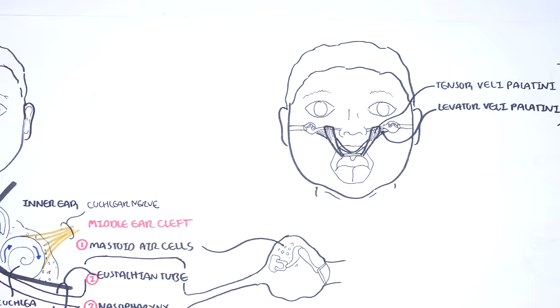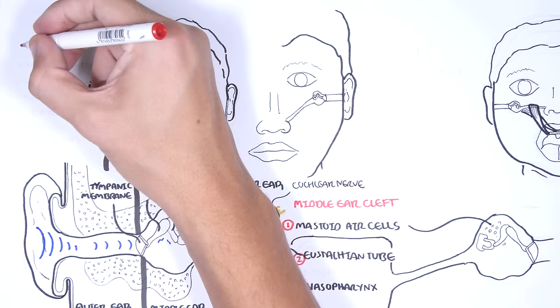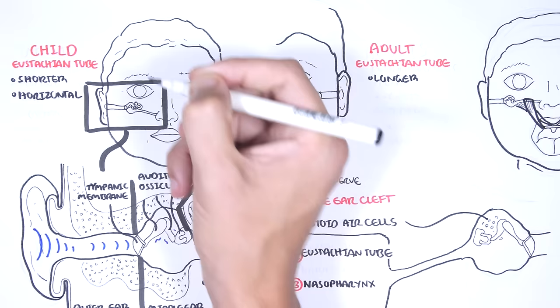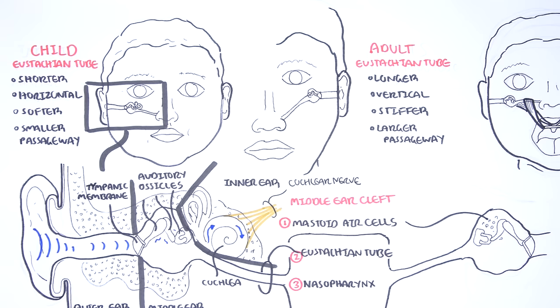Otitis media is more common in children precisely because of the anatomical differences of the eustachian tube between children and adults. Unlike adults' eustachian tube, the child's eustachian tube is more shorter, more horizontally aligned, it's softer, and has a smaller passageway. And all this allows for easier spreading of infection from the nasopharynx into the middle ear.